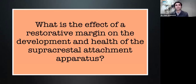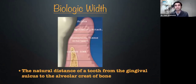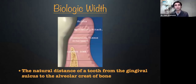Another question we have to ask ourselves is: what is the effect of the restorative margin on the development and health of the supracrestal attachment apparatus? To answer this, we're basically looking at the biologic width. The biologic width is defined as the natural distance of a tooth from the gingival sulcus to the alveolar crest. The basic number we've all been told to memorize is three millimeters — connective tissue attachment, epithelial attachment, and the sulcus measurement, each roughly about a millimeter each.